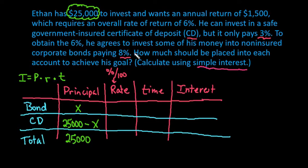Our rate of return for the bond is 8%. So we would do 8 divided by 100, which is 0.08. And our rate for our CD is 0.03. And our time we just want for after one year.